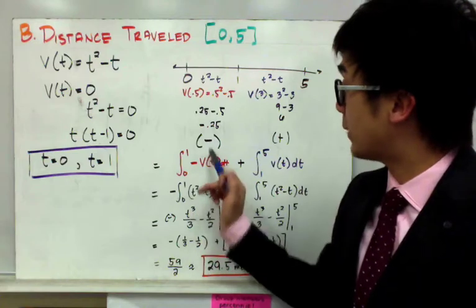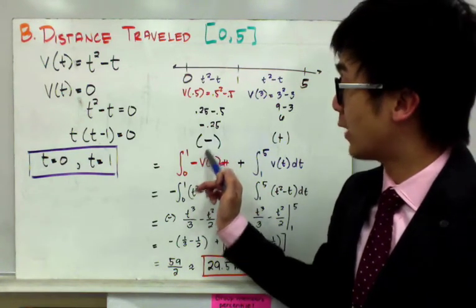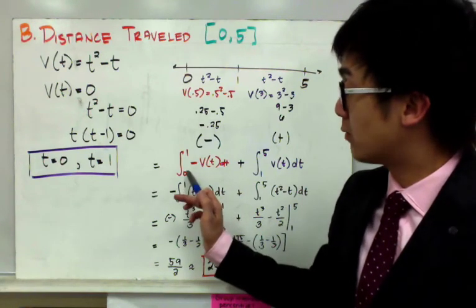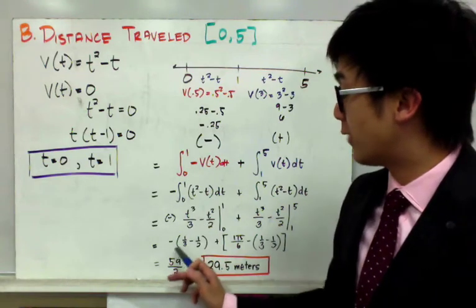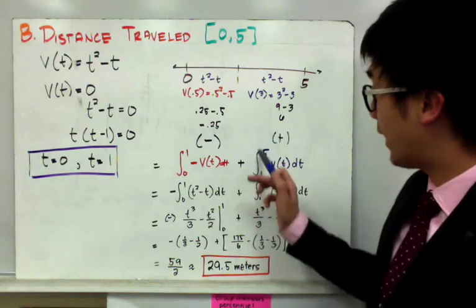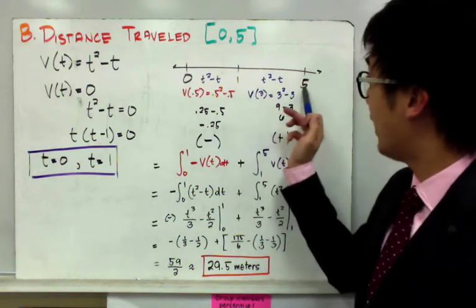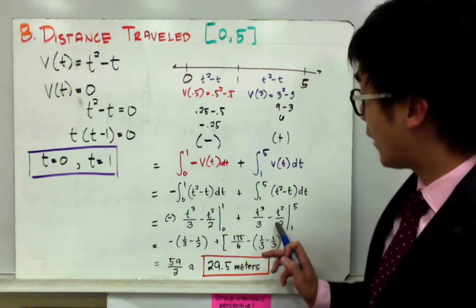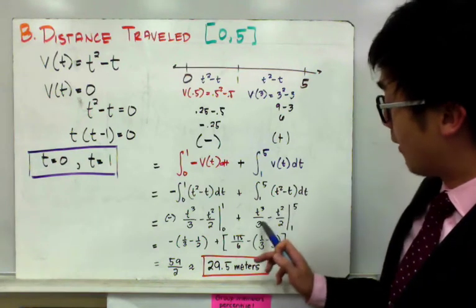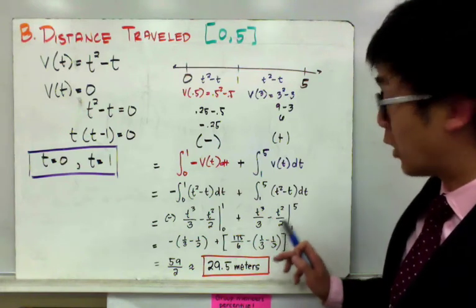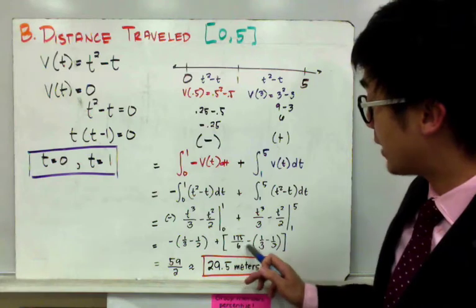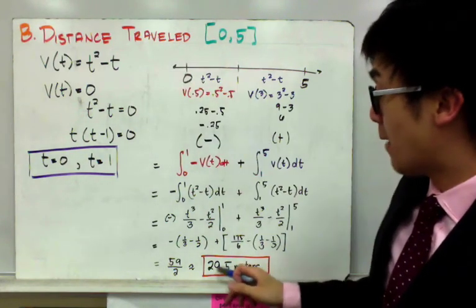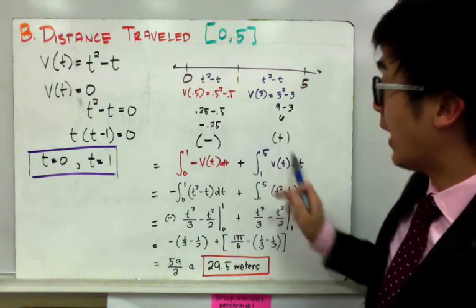The first integral is negative v(t) dt from 0 to 1, which evaluates to −(1/3 − 1/2) = 1/6. The second integral is (t² − t) dt from 1 to 5; finding the antiderivative t³/3 − t²/2 and evaluating gives 175/6 − 1/3. Combining both parts using the sign chart, the total distance traveled by this moving object is 29.5 meters.